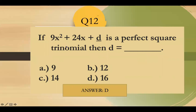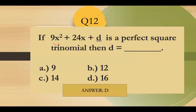Question number 12: if 9x squared plus 24x plus D is a perfect square trinomial, then D equals — the square root of the first term is 3x. For a perfect square trinomial, twice the product of the square roots of the first and last terms must equal the middle term. Since 2 times 4 times 3 equals 24, the last term must be 16. Answer: letter D.